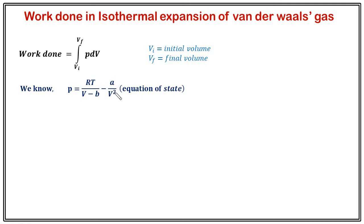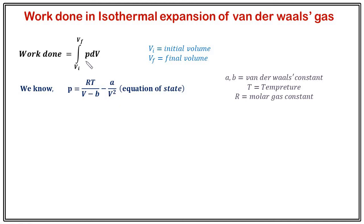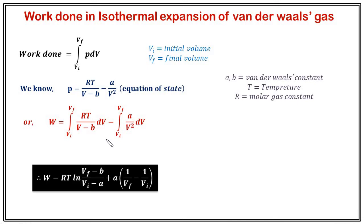The van der Waal equation of state is (p + a/V²)(V - b) = RT for one mole, where a and b are van der Waal constants, T is temperature, and R is the molar gas constant. Substituting p and integrating with the limits gives work done equal to RT ln[(Vf - b)/(Vi - b)] + a(1/Vf - 1/Vi). This is the work done for isothermal expansion or compression of a van der Waal gas. If Vf > Vi it is expansion; if Vf < Vi it is compression.